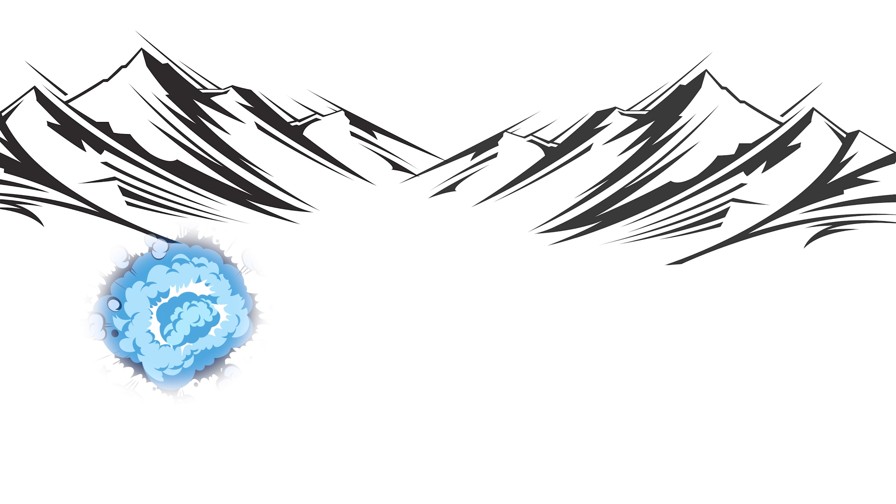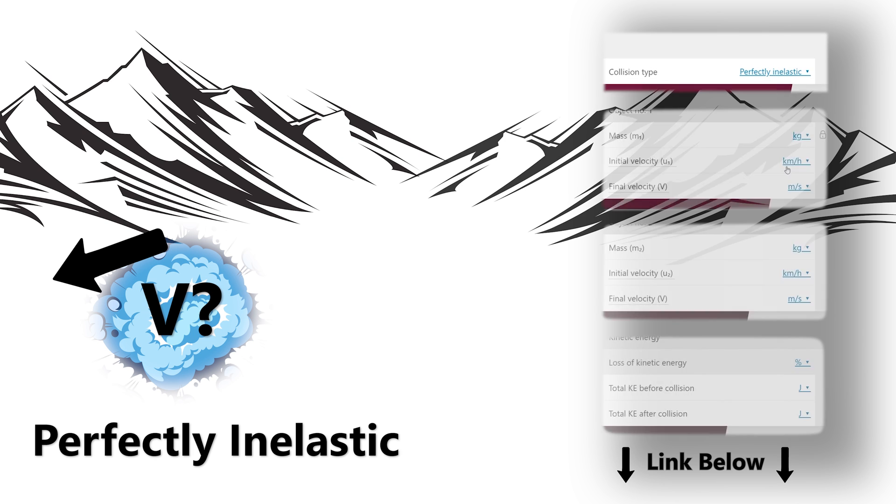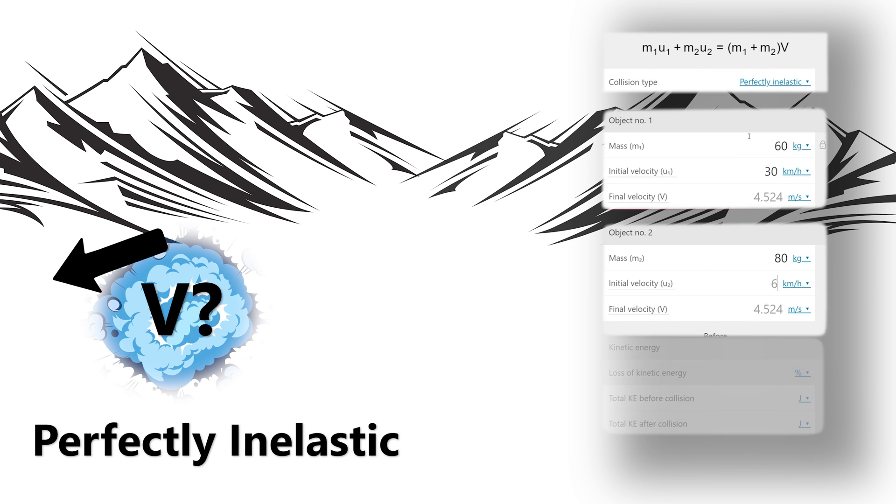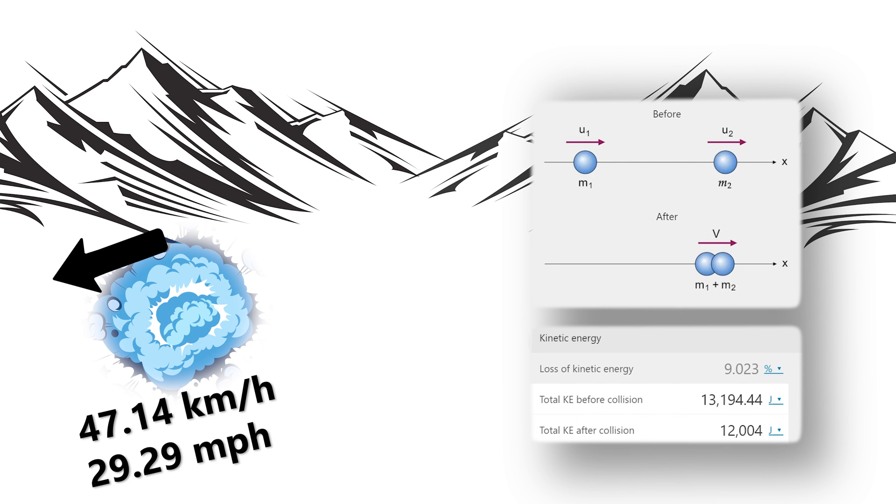This type of collision is called perfectly inelastic, but the real question is how fast is the ball going? Thanks to the online calculator we saw before we can know the answer. In this case it's 47 kilometers an hour. Also thanks to the calculator we can see what happens with the energy and in this case we have a loss of energy of 9%. This time is too much to be ignored.